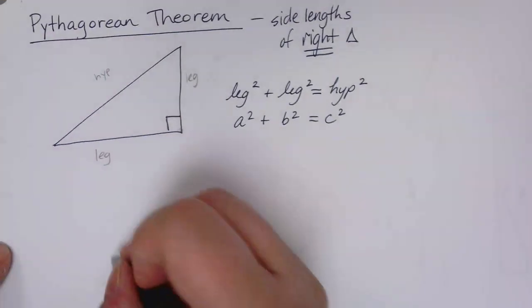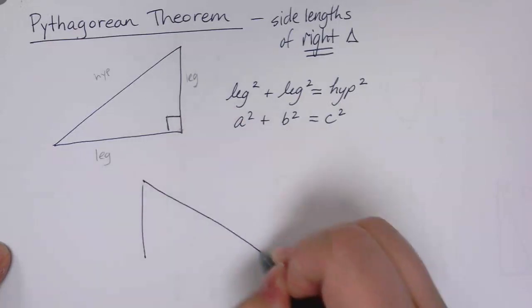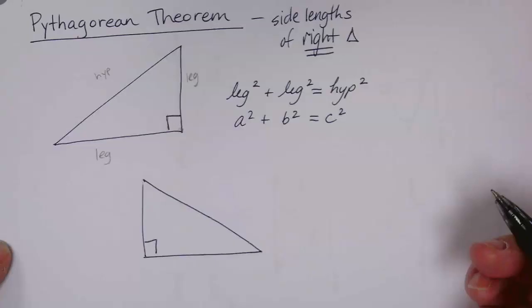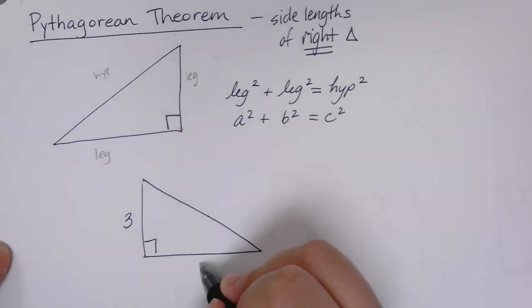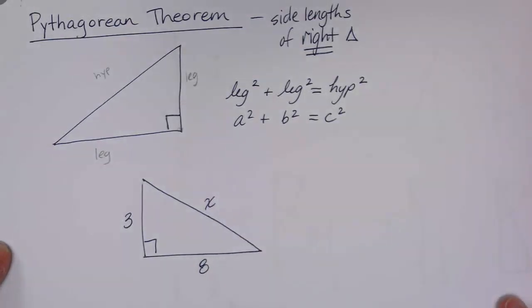So let's go ahead and use that to find a missing hypotenuse. Let's say we have a right triangle and we have legs of 3 and 8 and we want to know the length of the hypotenuse. This is a leg, this is a leg, they meet at the right angle. So here across the triangle, not touching the right angle, that's the hypotenuse.